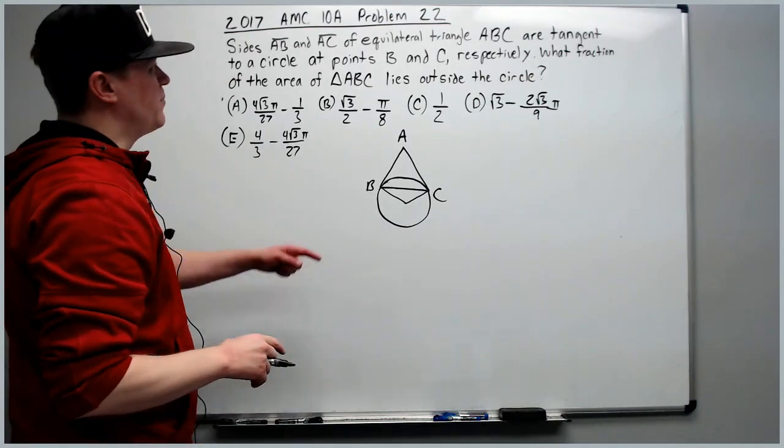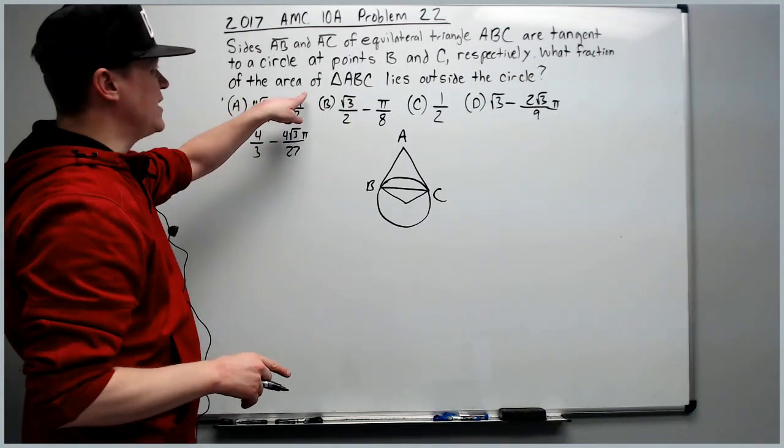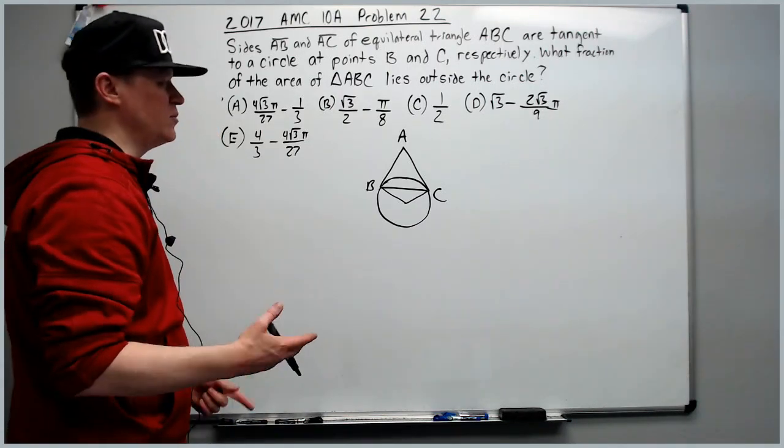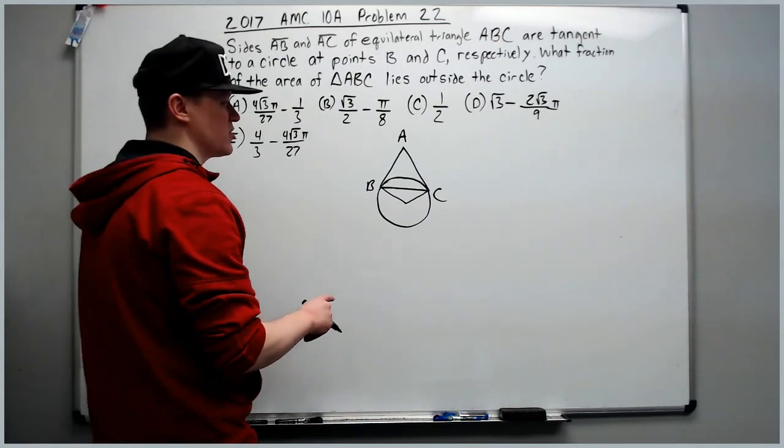What fraction of the area of triangle ABC—well, how are we going to find the area of it, we'll get to that—lies outside the circle.